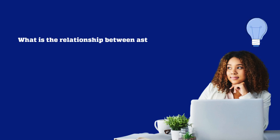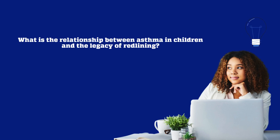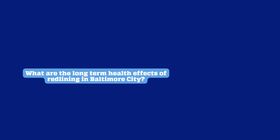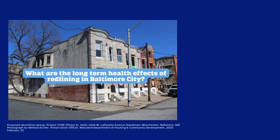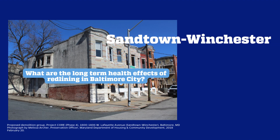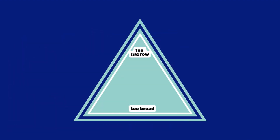Now you've got two solid options for a research question you can explore in your paper: what is the relationship between asthma and children and the legacy of redlining? Or, what are the long-term health effects of redlining in Baltimore City? You might be tempted to get even more specific and limit your results to an individual neighborhood like Sandtown-Winchester. But then you don't get quite enough results to make an argument. It's important to look for that sweet spot — not too broad, but not too narrow.